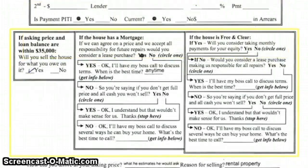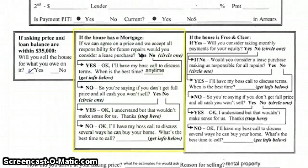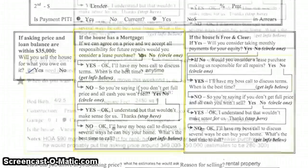Now is where you get into the really cool scripts. If you look on the left, it says: if the asking price and the loan balance are within $35,000 — in other words, the seller is asking very little more than what he owes — then ask that question. In this case, the seller thought it was worth about $300,000 but owed $300,000, which led the VA to ask if he'd sell for what he owes. Sure enough, there's a check mark — yes, he'll sell for what he owes and he would lease purchase it. The lease purchase question asks: if we agree on a price and accept all responsibilities for future repairs, would you consider lease purchase? He checked yes there as well. The right block doesn't apply in this case.